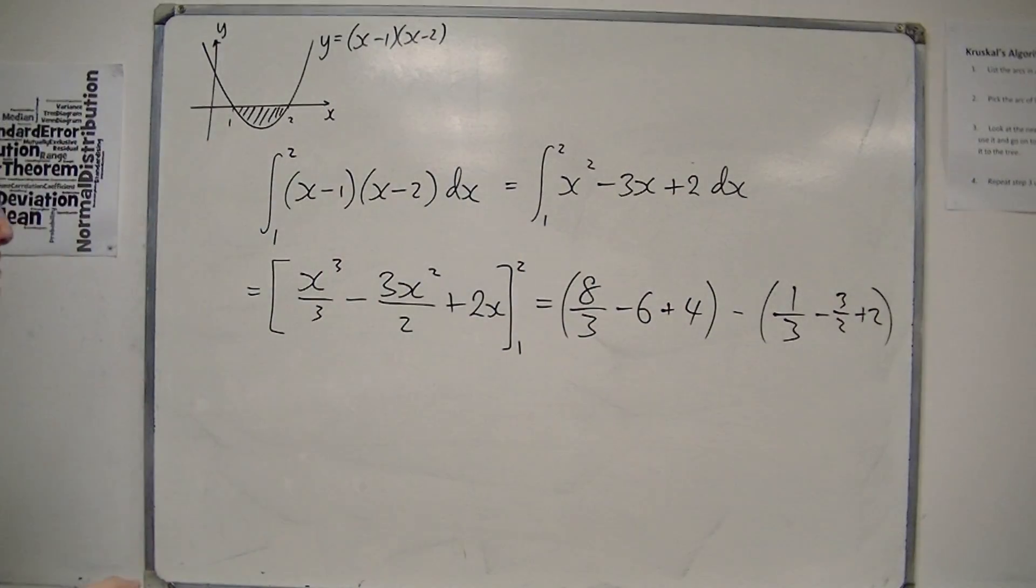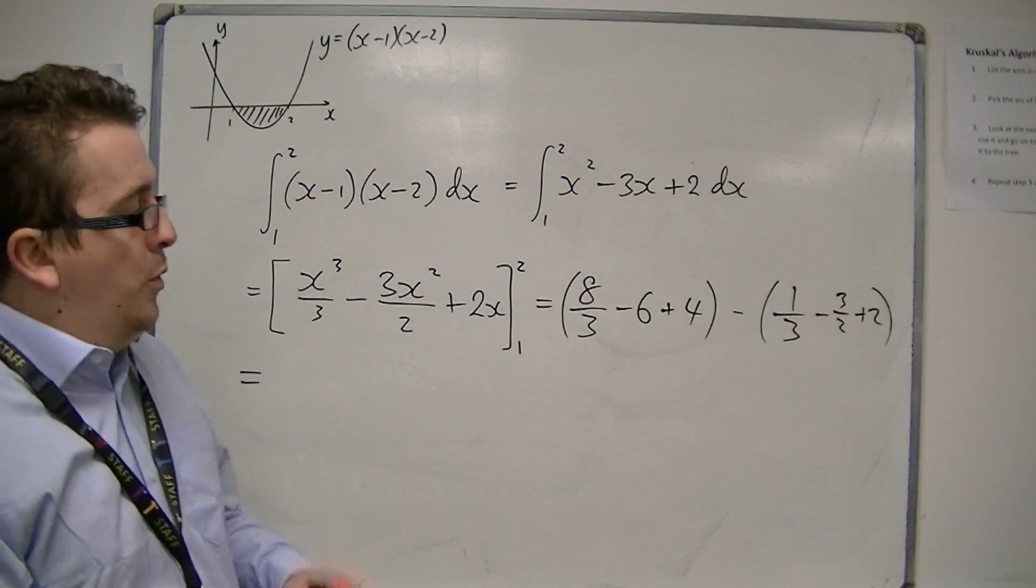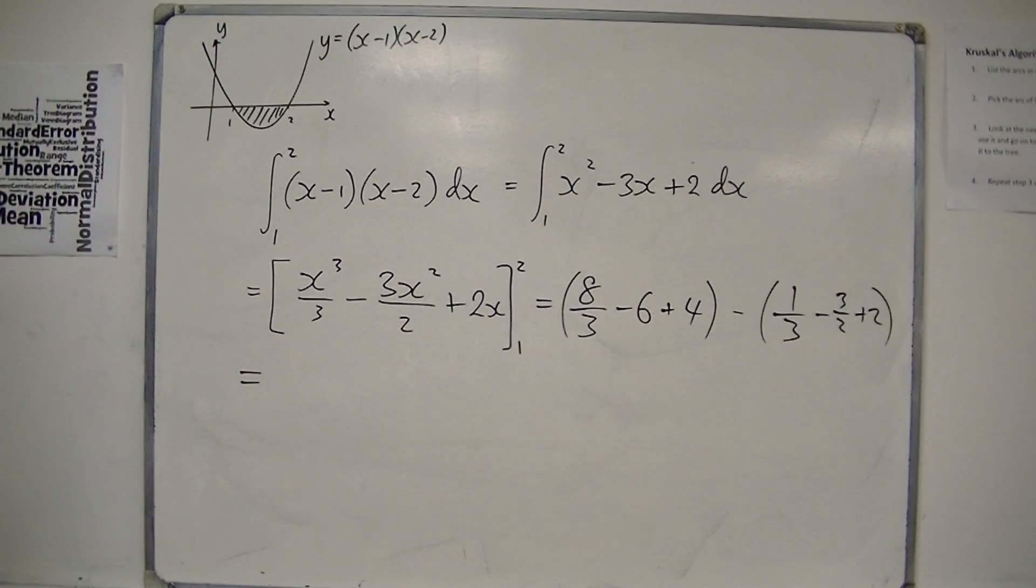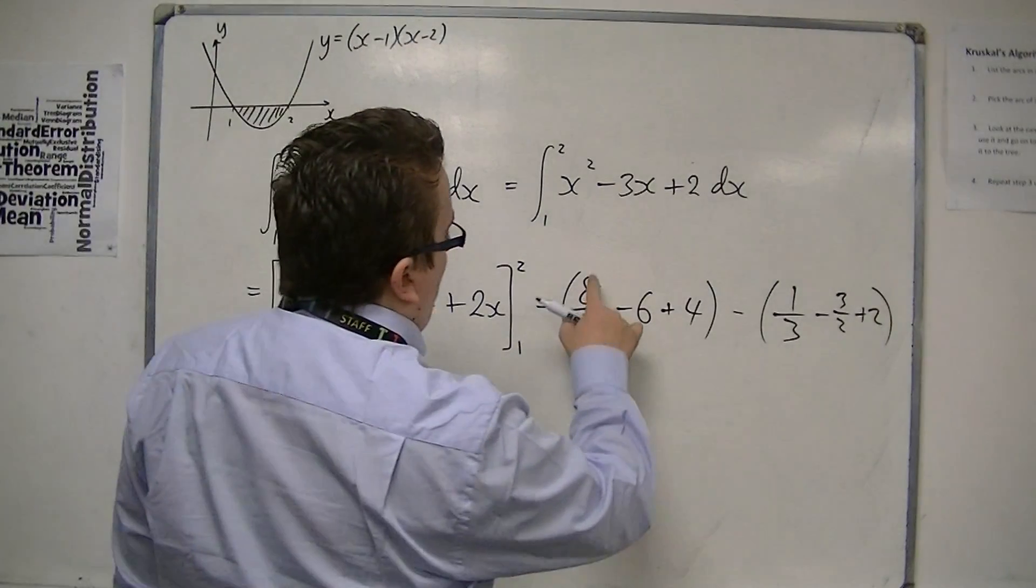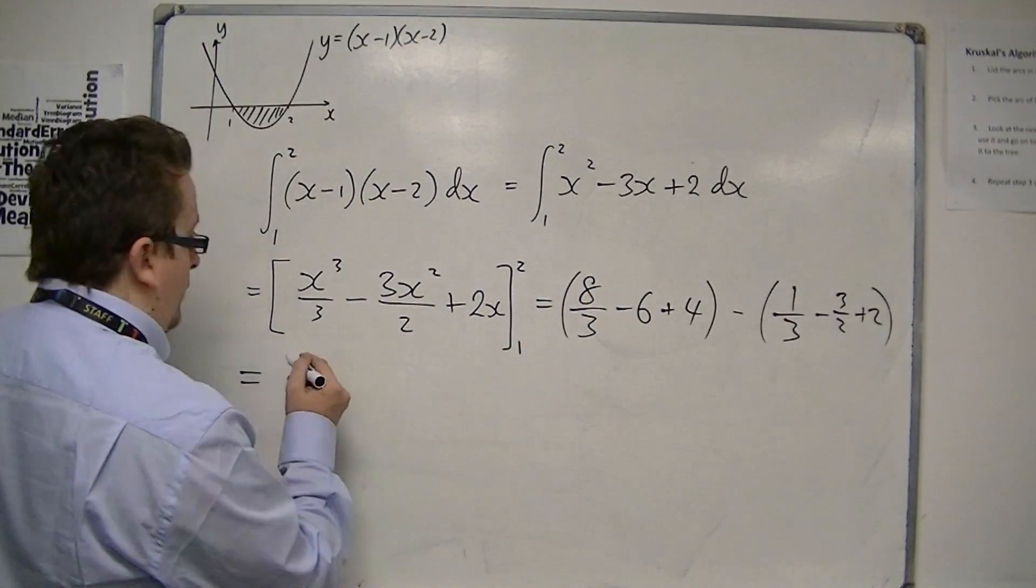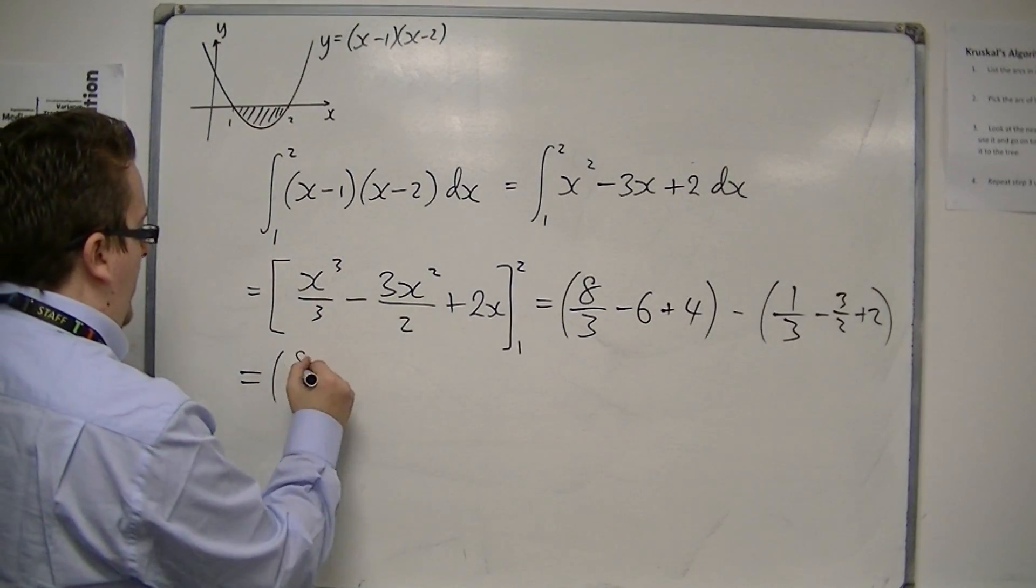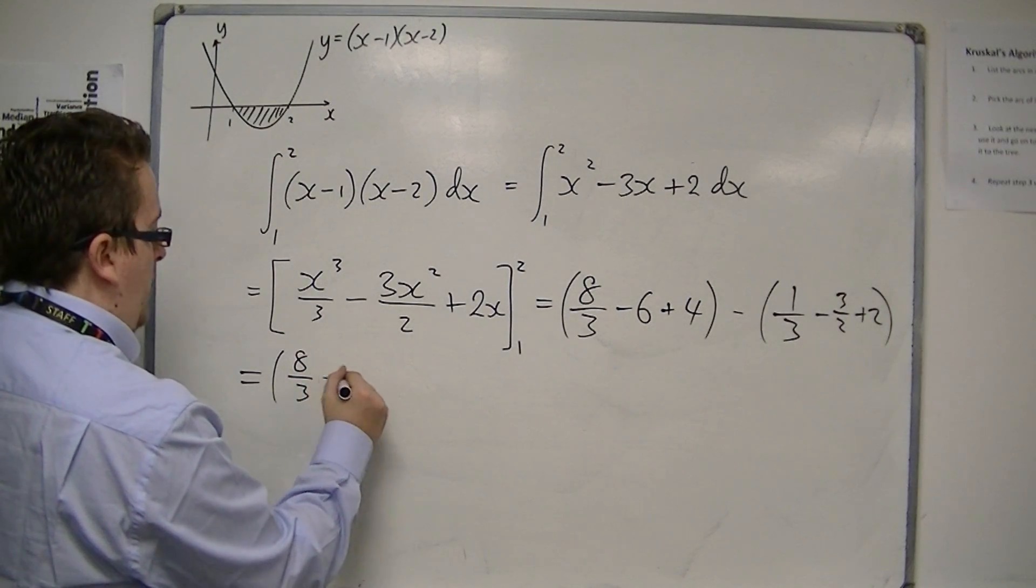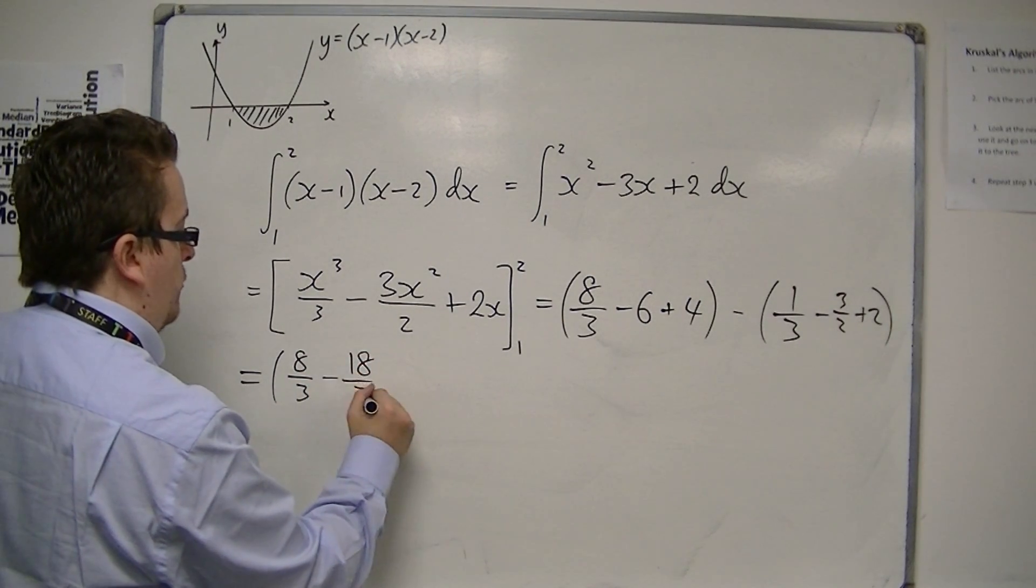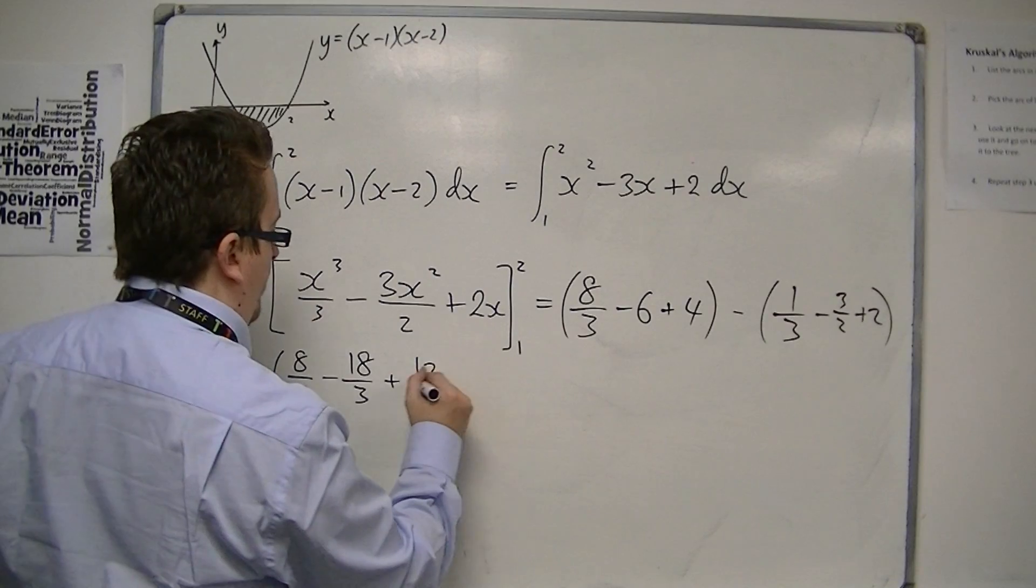So we're going to need to simplify these and work with some fractions. So we've got 8 thirds, so if I put them all over 3 for this first bracket. So we get 8 thirds, take away 18 over 3, plus 12 over 3.